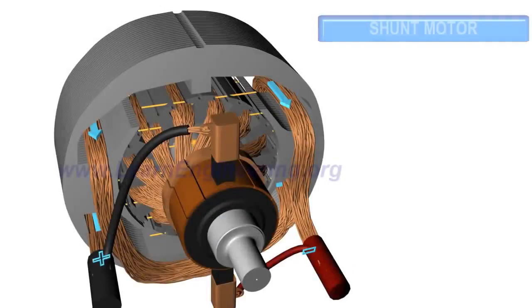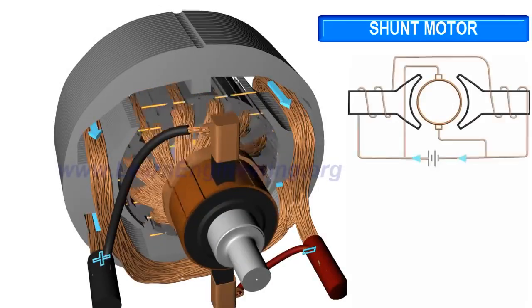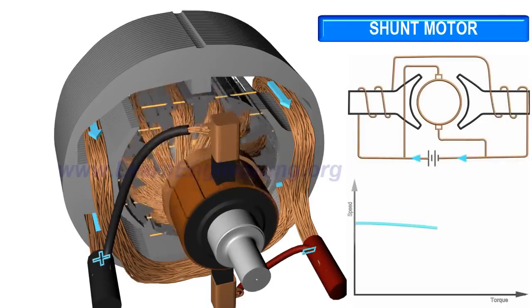The shunt motor has a low starting torque, but it is able to run almost at a constant speed, irrespective of the load acting on the motor.